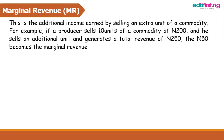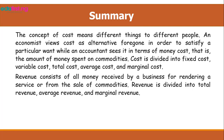In summary, the concept of cost means different things to different people. An economist views cost as alternatives foregone in order to satisfy a particular want, while an accountant sees it in terms of money cost — the amount of money spent on commodities. Cost is divided into fixed costs, variable costs, total costs, average costs, and marginal costs. Revenue consists of all money received by a business and is divided into total revenue, average revenue, and marginal revenue.